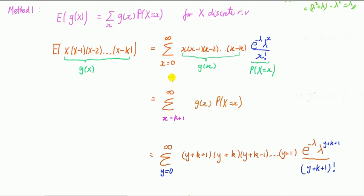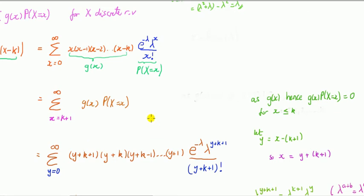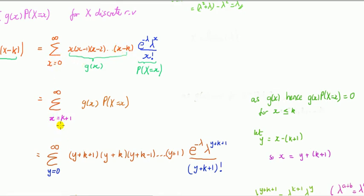I've changed the summation to begin at x = k+1. Why? Because this function g(x), and hence this product, is 0 for all values of x less than or equal to k. When x is 0, the whole expression is 0. When x is 1, it's 1 times (1 minus 1) = 0 again. This continues all the way until x equals k, still giving 0. So the first non-zero term is when x is k+1.